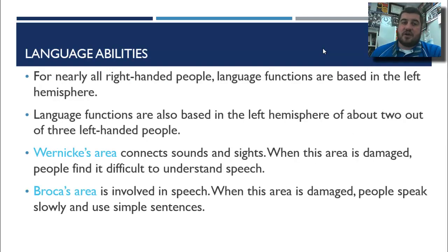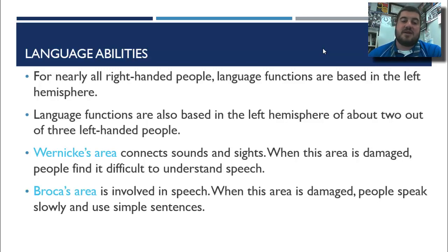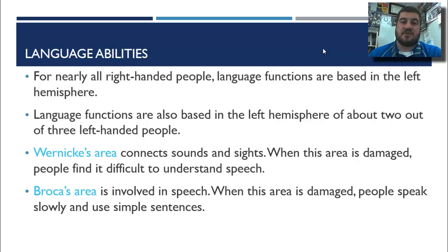Language abilities in the brain: for nearly all right-handed people, language functions are based in the left hemisphere, and also about two out of every three left-handed people as well. That's where language, thinking, and planning take place. Wernicke's area and Broca's area are two places involved in speech and hearing. Wernicke's area connects sights and sounds together — if it's damaged, people find it difficult to understand speech, though they may be able to speak fine. Broca's area is involved in producing speech — when damaged, people speak slowly and use very simple sentences, though they may hear you fine.